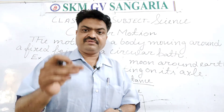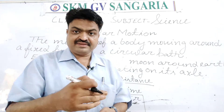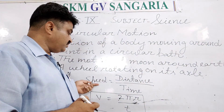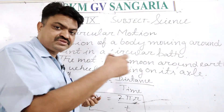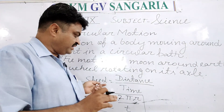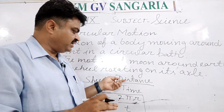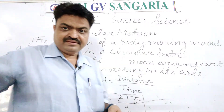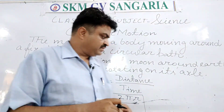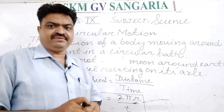The distance per unit time covered by an object in a circular path is known as circular speed. Its formula is the same formula that we use in the case of a straight path — it is distance upon time.